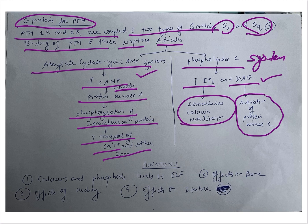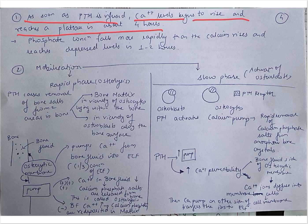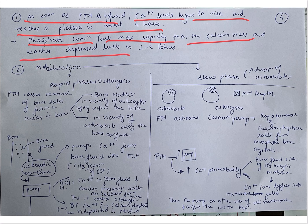The functions are covered under four headings: calcium and phosphate levels in ECF, effects on bone, effects on kidney, and effects on intestine. When PTH is infused IV, calcium levels begin to rise and reach a plateau in about four hours. In contrast, phosphate concentration falls more rapidly than calcium rises, reaching depressed levels in one to two hours.